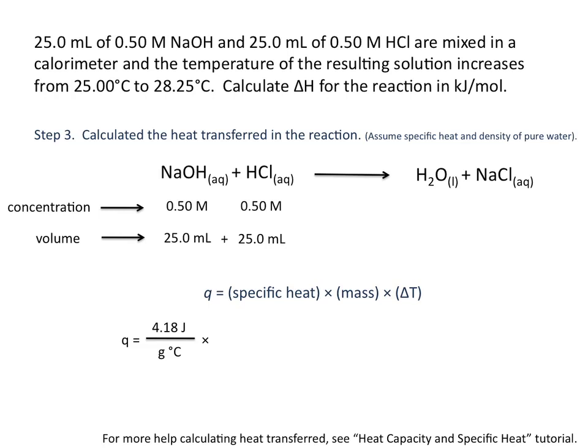So the specific heat is the same as that of pure water, 4.18 joules per gram degree Celsius. We multiply this times the mass. But you're probably looking at your problem and wondering where the mass is. We're given two volumes. Well, when we mix these volumes together, we come up with 50 milliliters of solution.